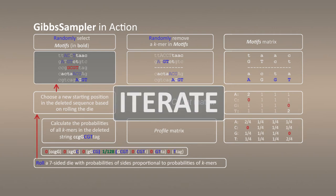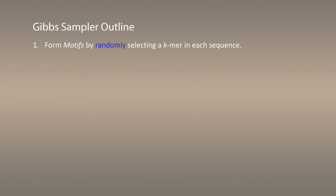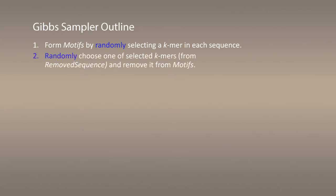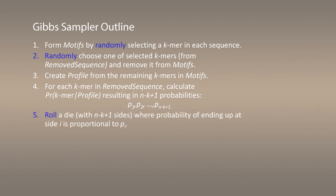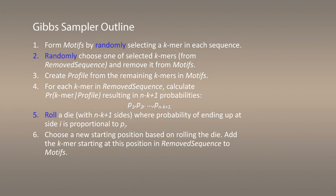It iterates until motifs keep improving, or until a certain number of iterations — say, one hundred thousand iterations. The outline of the Gibbs sampler: we randomly select a k-mer in each sequence as before. We randomly choose one of the selected k-mers from a sequence called sequence star and remove it from the set of motifs. We create a profile from the remaining motifs. For each k-mer at position i in the sequence, we compute its probability of being generated by the profile, resulting in n minus k plus one probabilities. We then generate a dice with n minus k plus one sides whose side probabilities are proportional to those we computed. We roll this dice and, depending on the outcome, return motif i back to the sequence we removed, and we iterate.